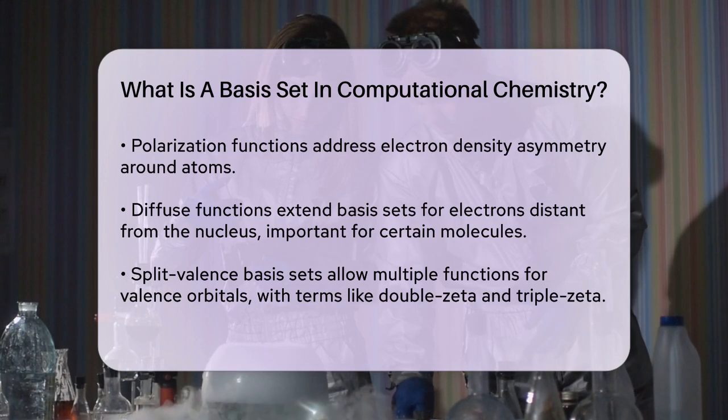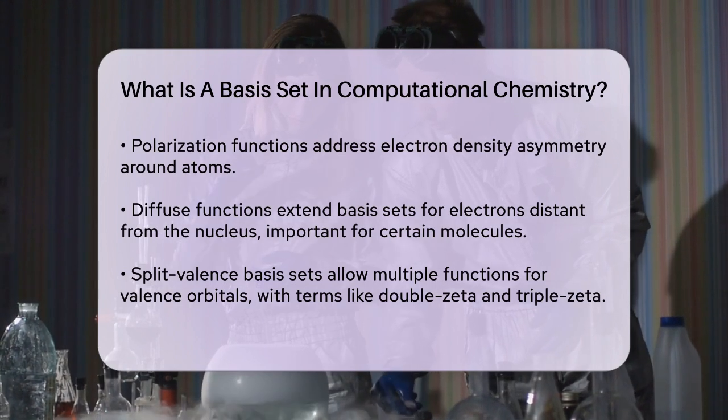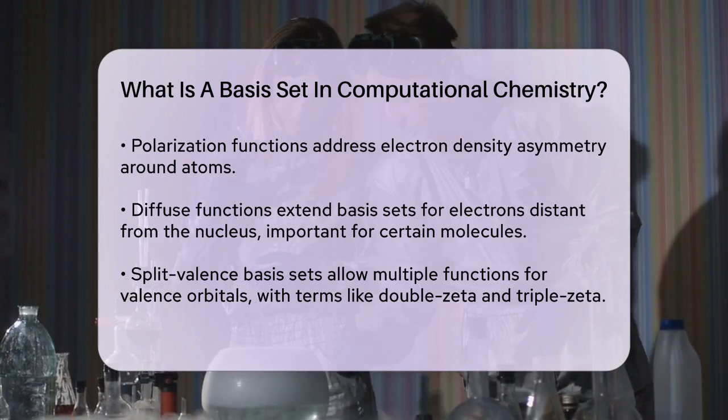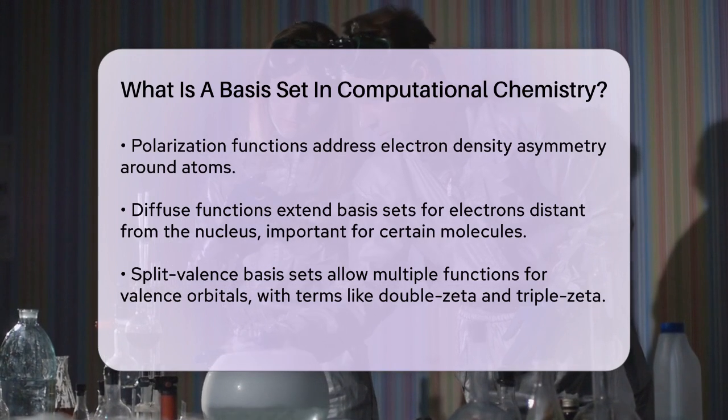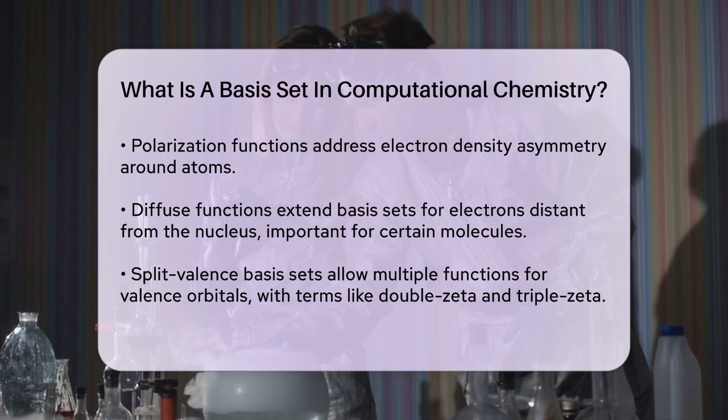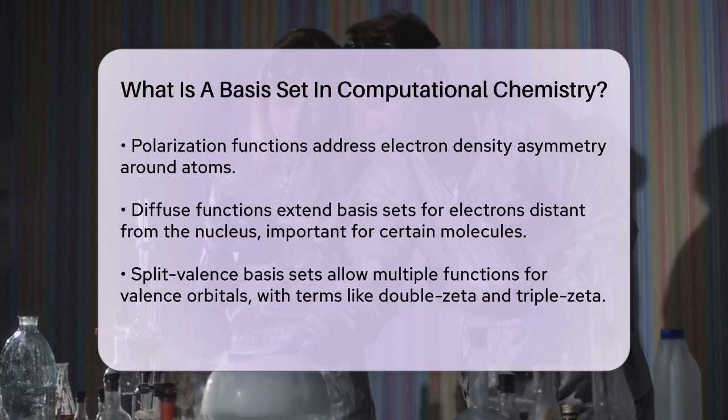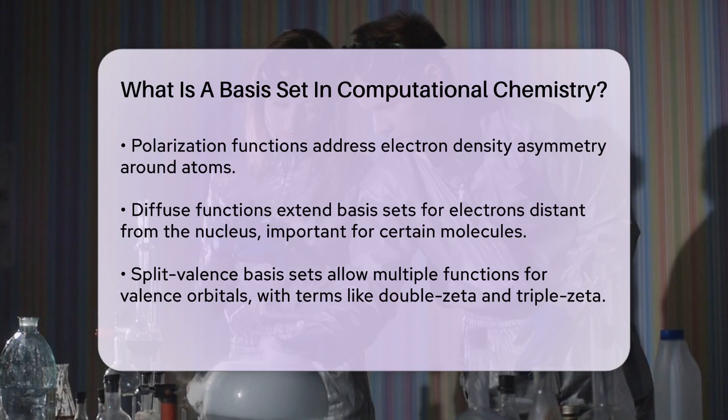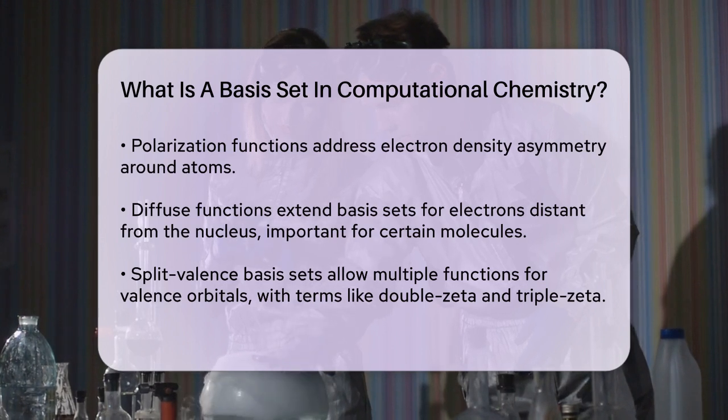This is where terms like double zeta, triple zeta, and quadruple zeta come in, indicating the number of basis functions used for each valence orbital. For example, the 6-31G basis set is a split-valence double zeta polarized basis set that adds polarization functions to the 6-31G set.